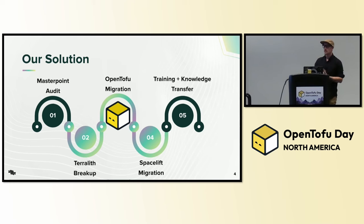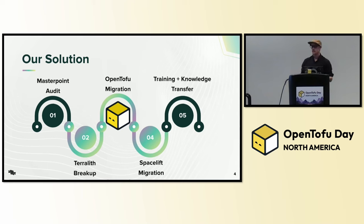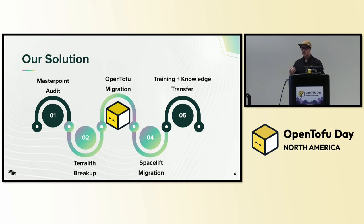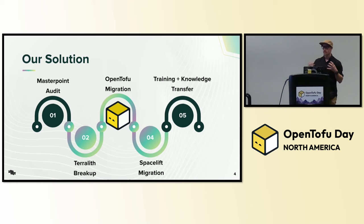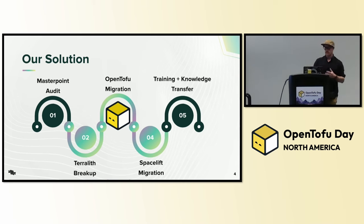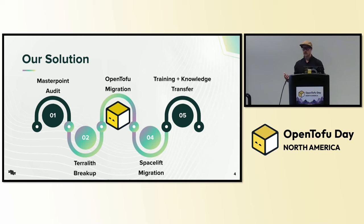This is what we do. We came in and provided our expertise. We did an audit — looked at their code, got a good understanding of why this was a struggle and what was happening under the hood. From that audit, we came up with three suggestive implementations: break up their TerraLith — split that large state file of 40,000-plus resources into separate state files per client; get them onto a TACOS tool, specifically Spacelift; and migrate them onto OpenTofu.